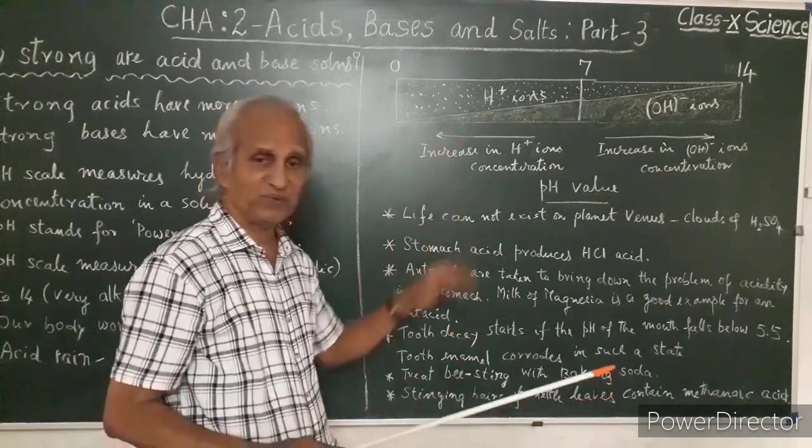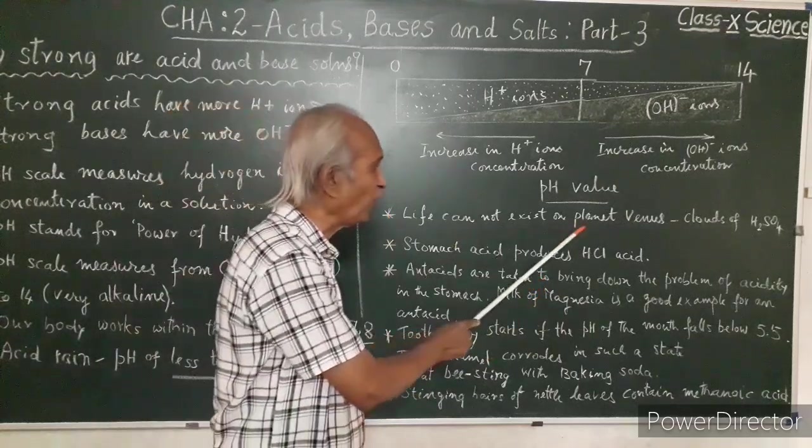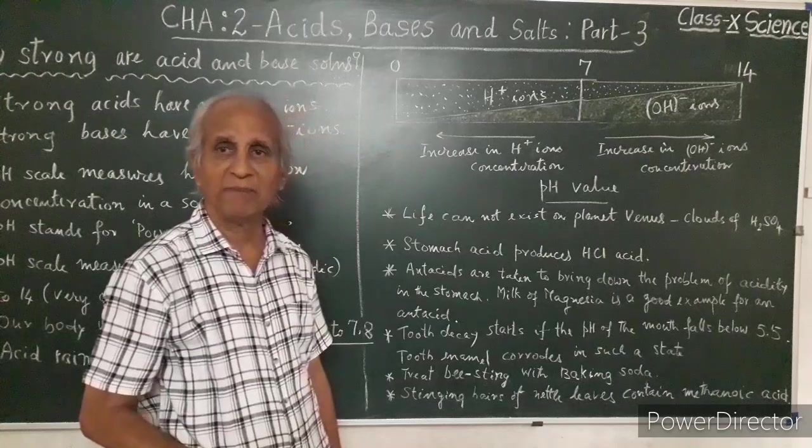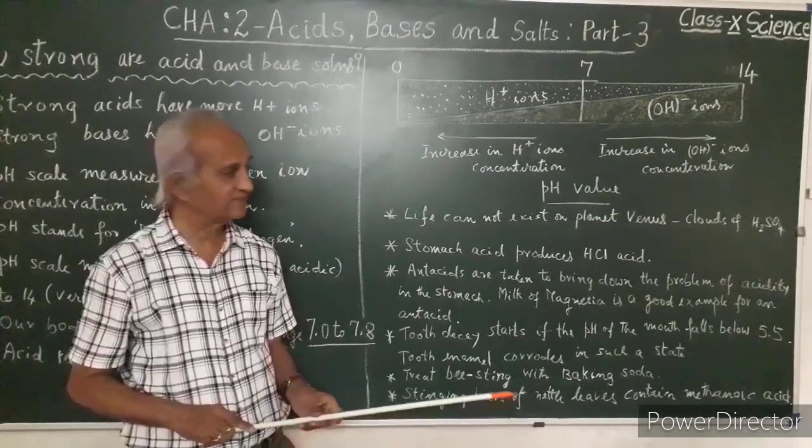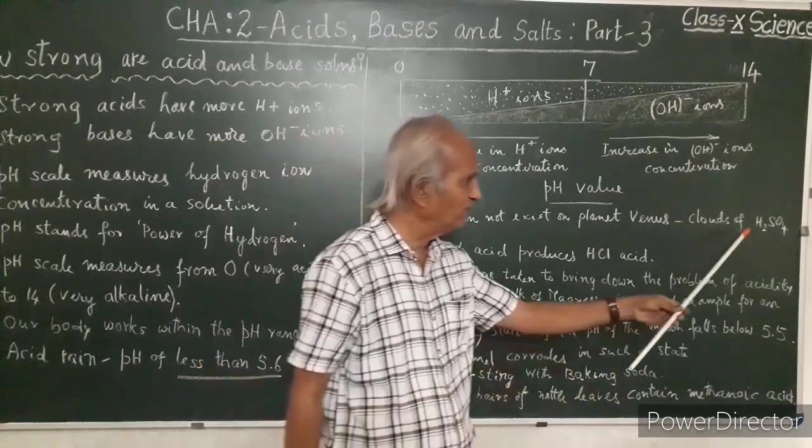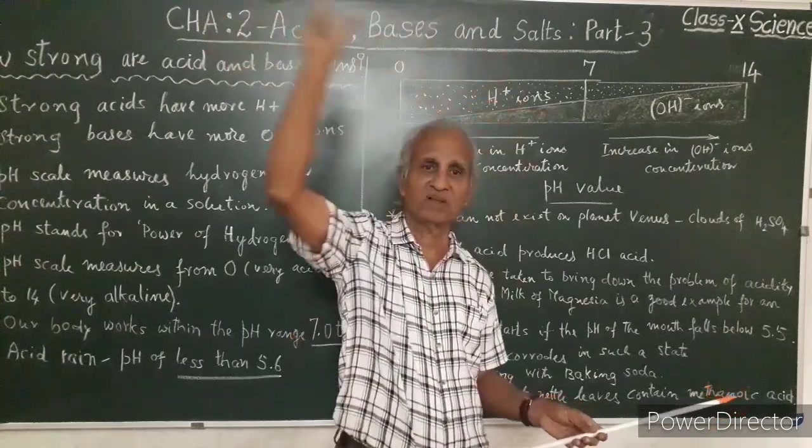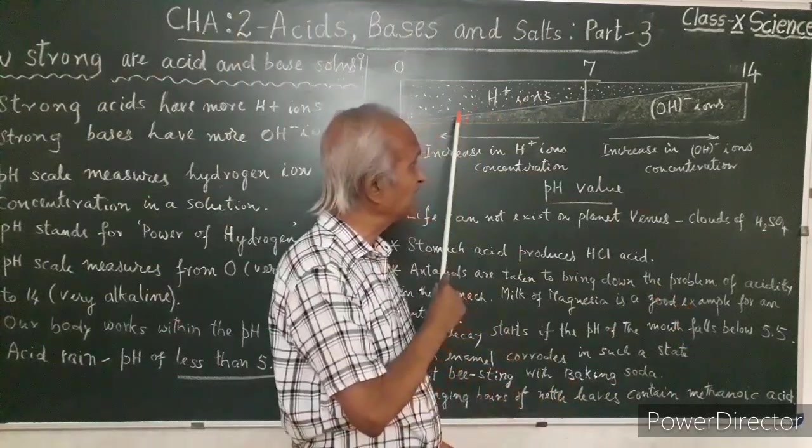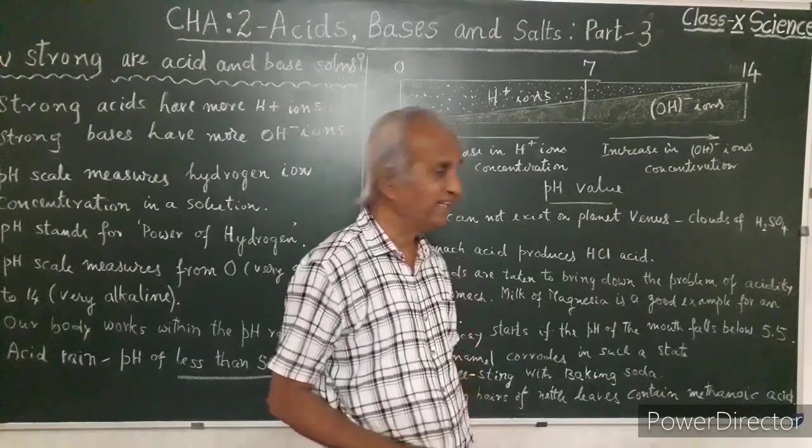Life cannot exist on planet Venus. We can go to Mars somehow we can manage but we cannot go to Venus. The reason is that Venus is covered by clouds of sulfuric acid. Sulfurous fumes are covering planet Venus. The pH is very low. We cannot survive on Venus for that reason.